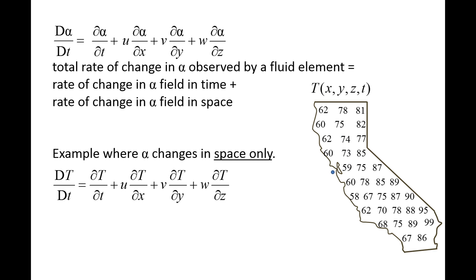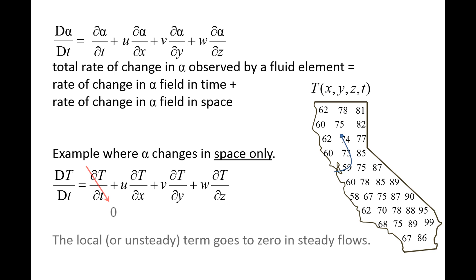Now let's imagine a situation where the temperature varies between locations but does not change in time — that is, the temperature field is steady. Once again, the fluid element will experience a change in temperature, but only because the temperature field varies in space. The temperature field does not vary in time, so partial temperature/partial t is equal to zero.